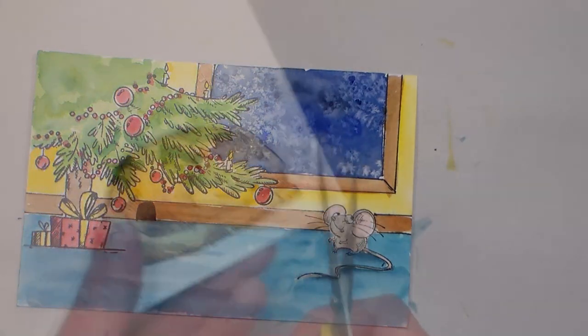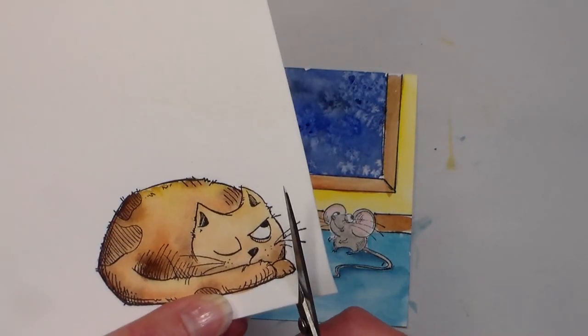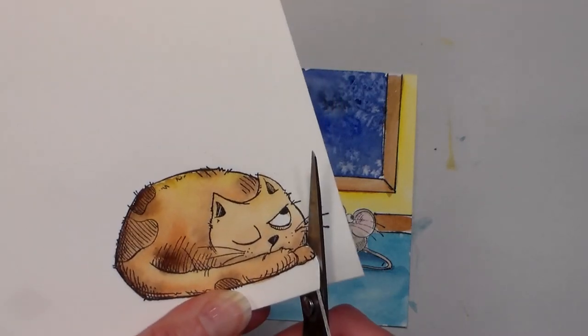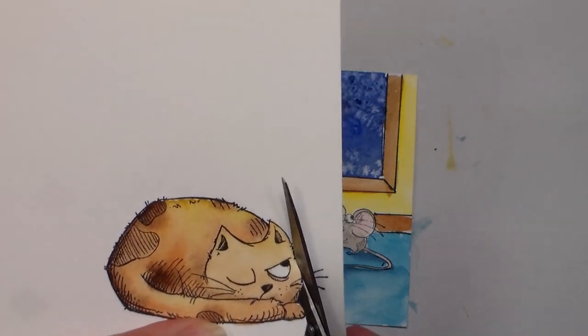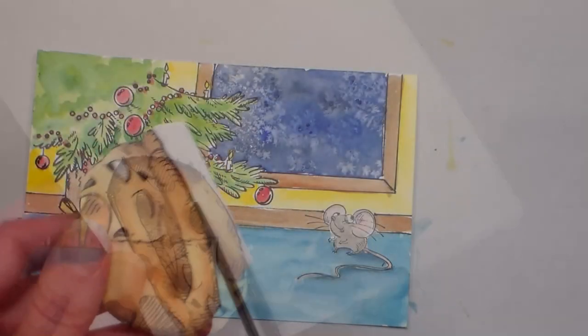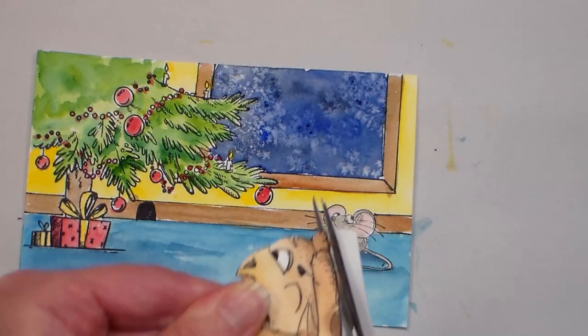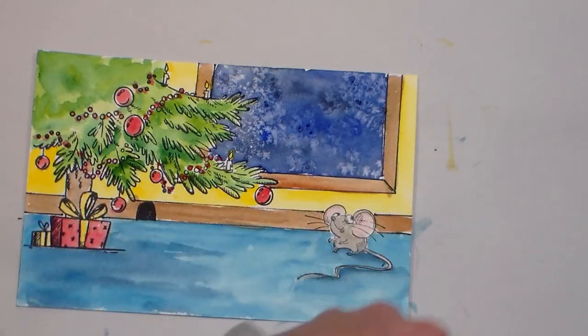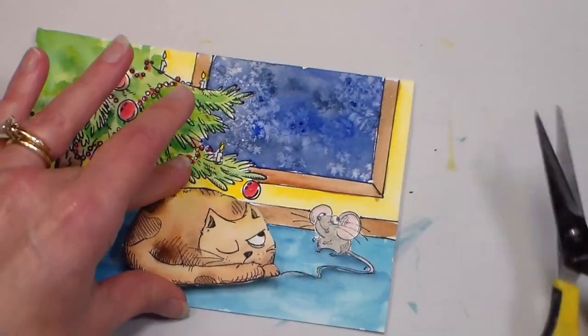While the baseboard was drying, I decided to cut out the cat that I stamped on the other piece of watercolor paper, and I am cutting really close to the edges because I don't want to have a white line. That's why I didn't cut around the whiskers, because I thought I would end up with some white sparkle that really would detract from the scene, since everything else except for the candlesticks are colored in.